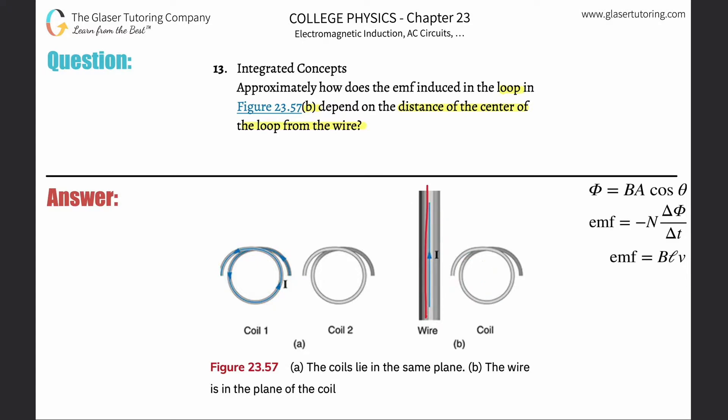So the thing is, how does it affect the emf in this coil if this wire were to, let's say, move closer or move further away from this coil? Well, we know that the induced emf is a function of a changing magnetic flux.